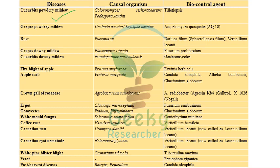Now we look at specific biocontrol agents recommended for various diseases. For cucurbit powdery mildew, caused by Golovinomyces (Podosphaera xanthi), the biocontrol agent recommended is Tilletiopsis. For grape powdery mildew, caused by Uncinula necator or Erysiphe necator, it is Ampelomyces quisqualis 10 (AQ10). For rust caused by Puccinia species, Darluca filum, Sphaerellopsis filum, or Verticillium lecanii can be recommended.